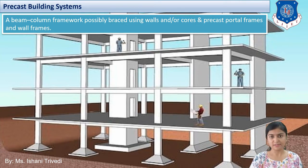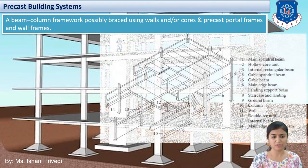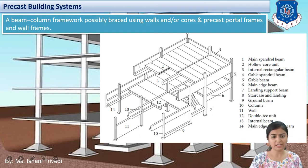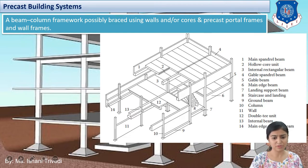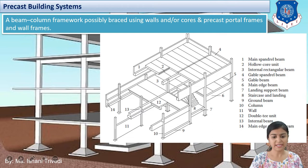The precast building system is a beam column framework braced using walls or cores and precast portal frames and wall frames. The first component is my main spandrel beam. The second is my hollow core unit — that is my hollow core slab. The third is the internal rectangular beam. The fourth is the gable beam. The fifth is the same spandrel and beam. The seventh is the landing support. We are talking about a precast portal frame system. The ninth is the ground beam. The tenth is my column. Eleven is my wall. Twelve is my double D unit. Thirteen is my internal beam. Fourteen is the edge spandrel beam.